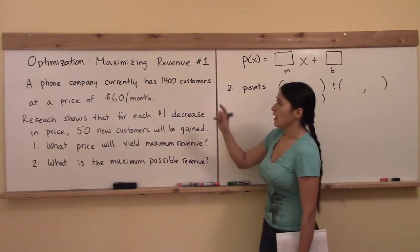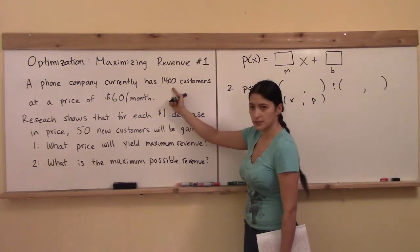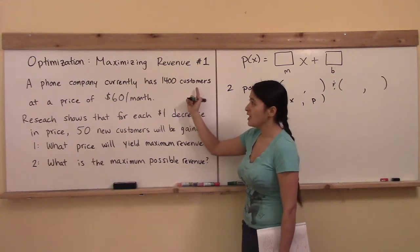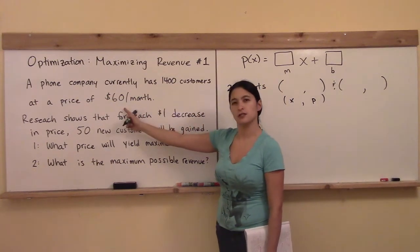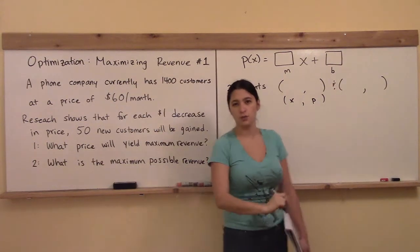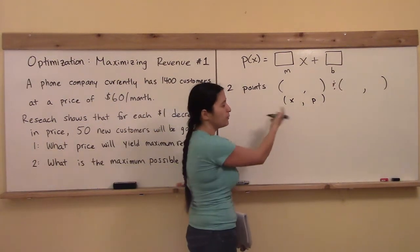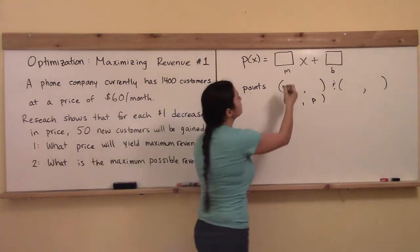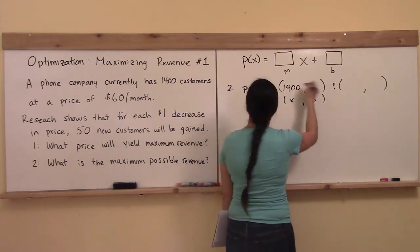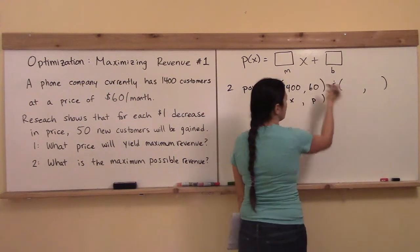Sentence number one, a phone company currently has 1,400 x's and the price is P equals 60. So what does that translate to into math? What point is that right there? 1,400 and then the price is 60, exactly.